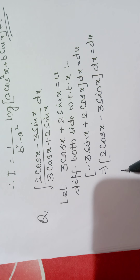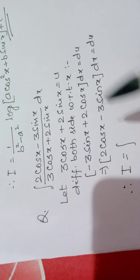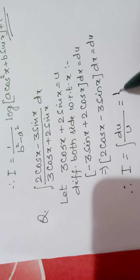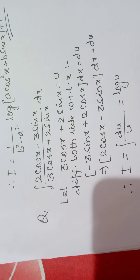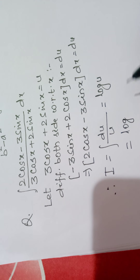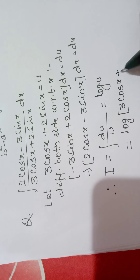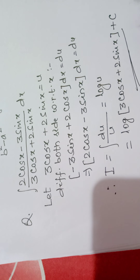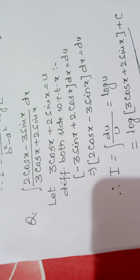Your integration will now be written as (2 cos x minus 3 sin x) dx, which equals du, upon u. So it is 1 upon u du, and the integration of 1 upon u is log u. Writing back the value of u, the final result is log of (3 cos x plus 2 sin x) plus integral constant c. In this way we solve various problems.